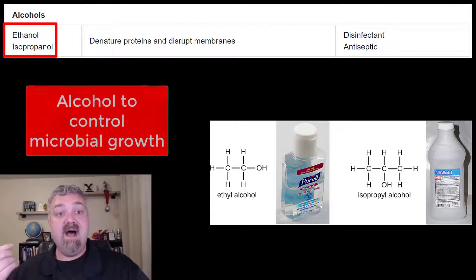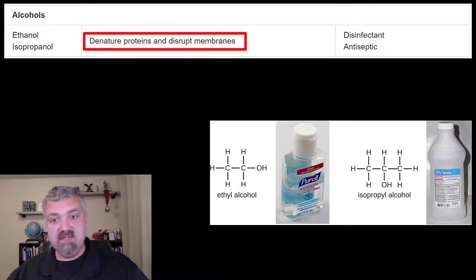So two types of alcohol. How they function: they can denature proteins, so they basically can unravel the proteins, and if a protein loses its shape, it loses its function. They also can disrupt the lipid membranes.